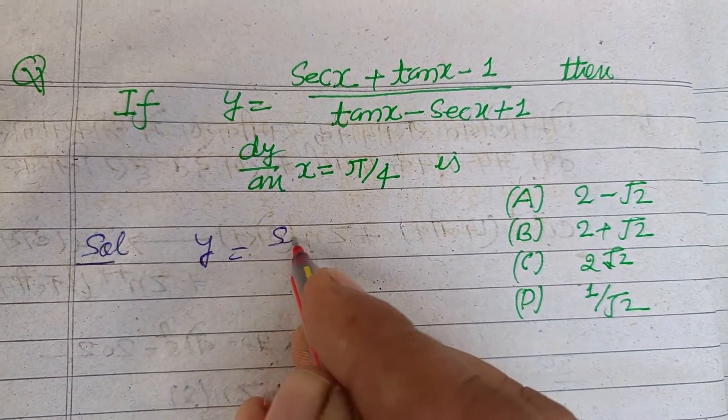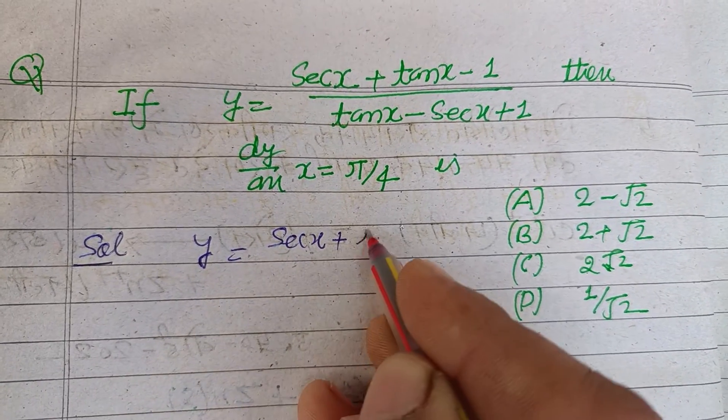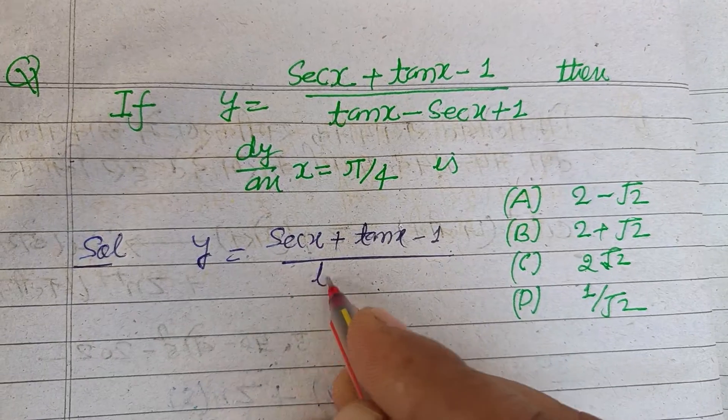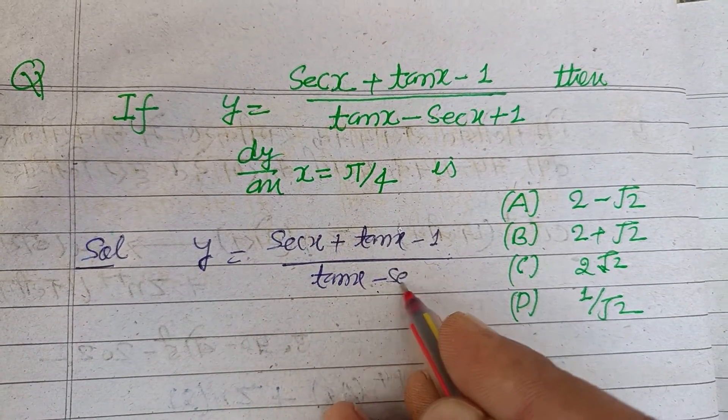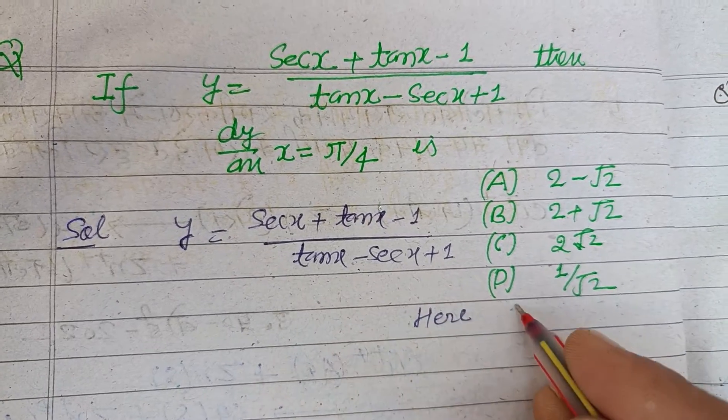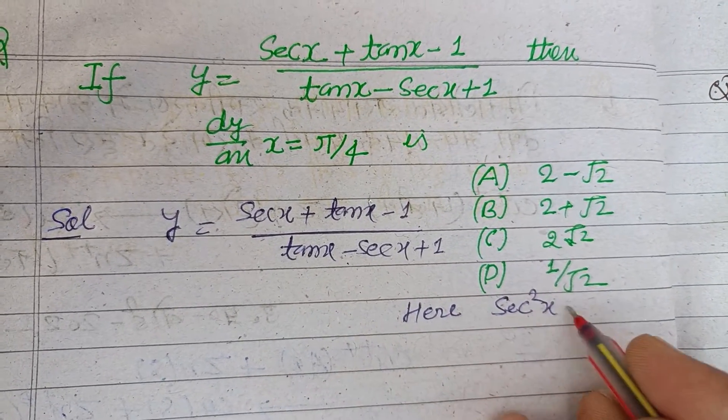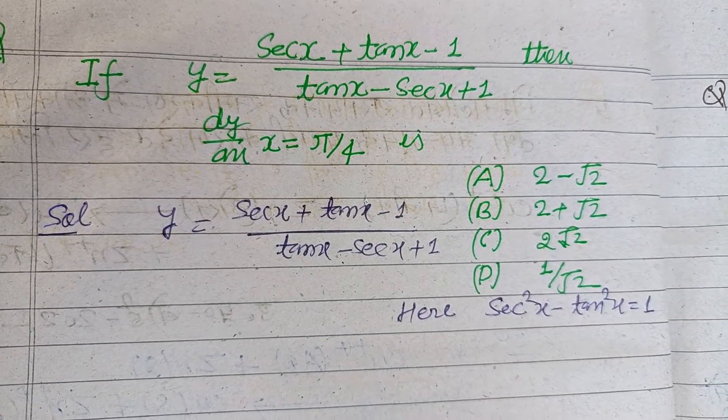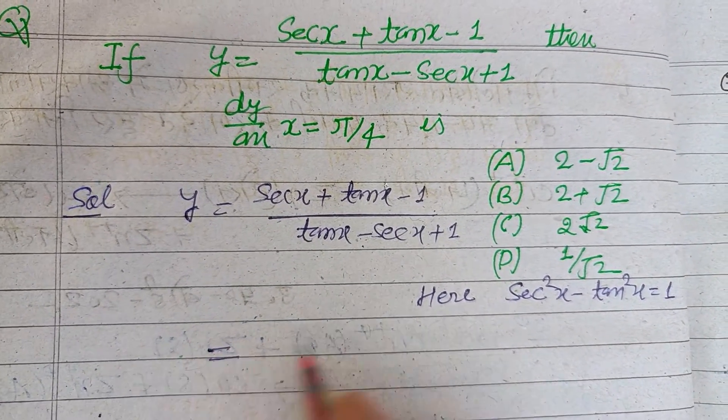So students, here we have y = (sec x + tan x - 1)/(tan x - sec x + 1). Here you know that sec²x - tan²x = 1. This is our identity.